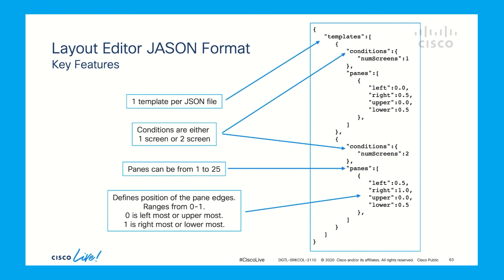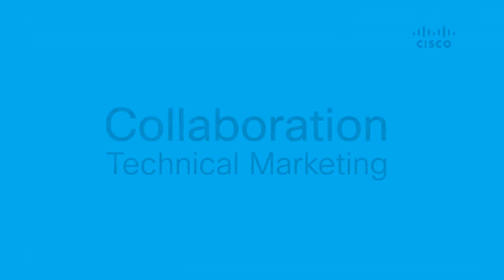The configuration of layout editor needs creation of a JSON file. This JSON file will have defined the number of panes, positioning of the panes, and size of the panes. This JSON file also defines what the layout should be if the endpoint is single screen or dual screen. This concludes all the screen layout related customization options.